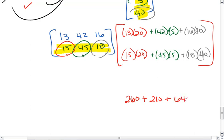And then our second element is 15 times 20, which is 300, plus 45 times 5 is 225, plus 18 times 40 is 720.